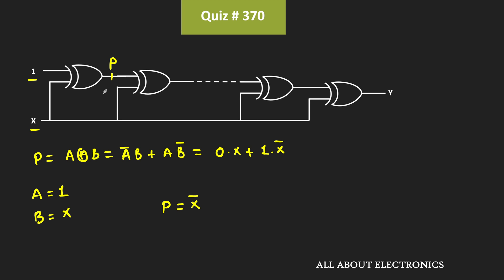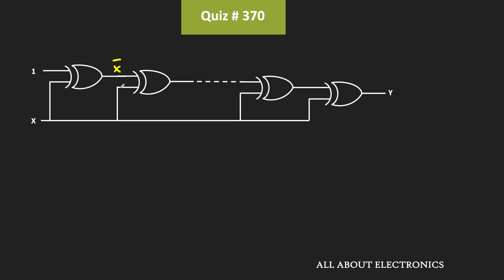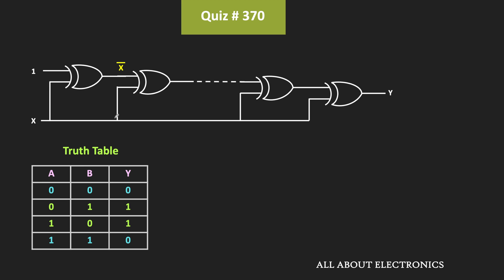So X̄ is given as input to the next XOR gate, along with the other input X. That means the inputs to the second XOR gate are X̄ and X. As we've seen, the output of an XOR gate is 1 when both inputs are different. Since X and X̄ are complements — when X is 0, X̄ is 1, and vice versa — they are always different, so the output of the second XOR gate is equal to 1.